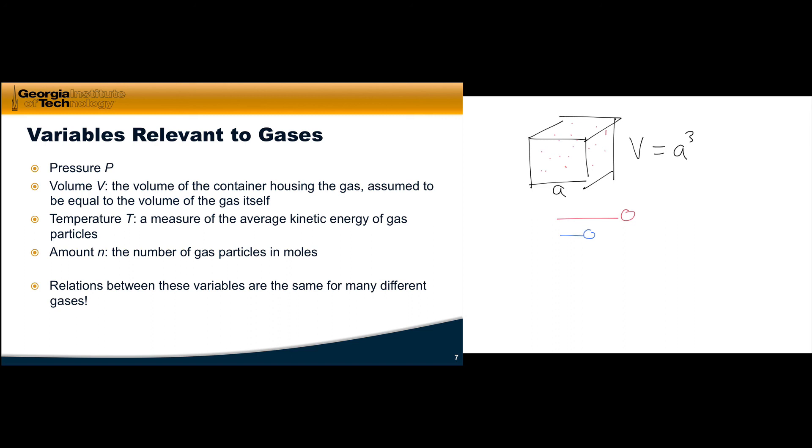It's the relations between these four variables—pressure, volume, temperature, and amount—that show how gas behavior is remarkably uniform, even across different types of gases. In the next video, we'll turn to empirical observations of gases and learn how these can be synthesized to generate the ideal gas law.